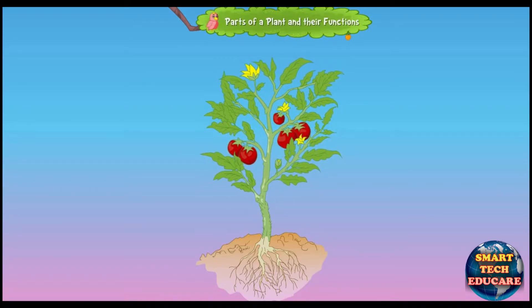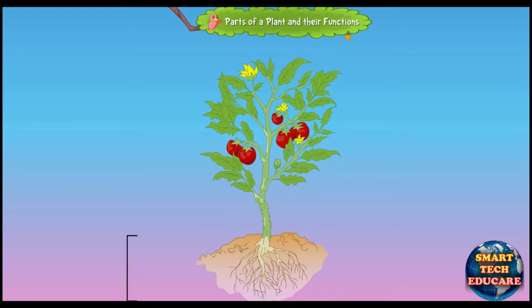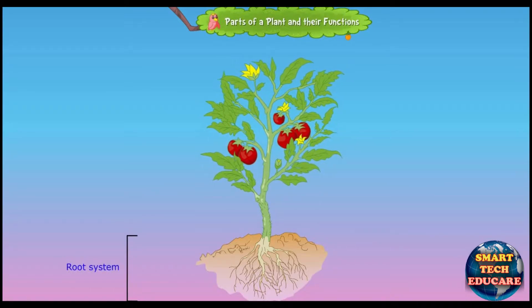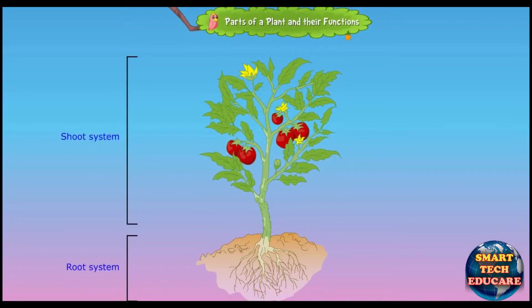A plant has two main parts. The part that grows under the ground is called the root system. The part that grows above the ground is called the shoot system.